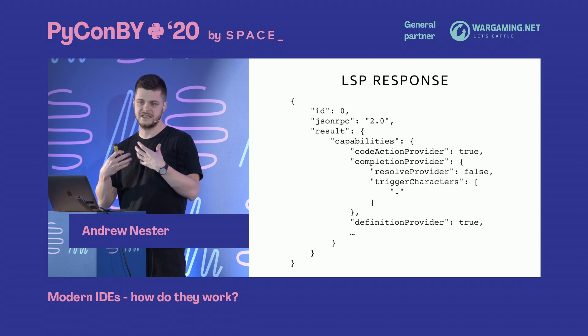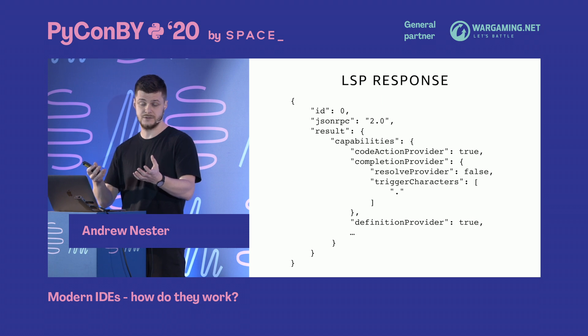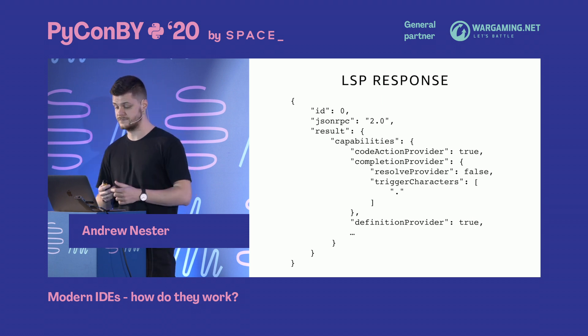Capabilities can be around 30 to 40 items. They define things like whether the server supports code completion, code definition, and so on. The IDE needs to know this so it understands what it can ask the LSP server to provide.